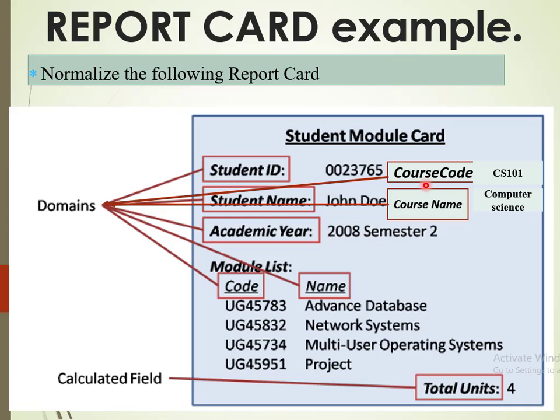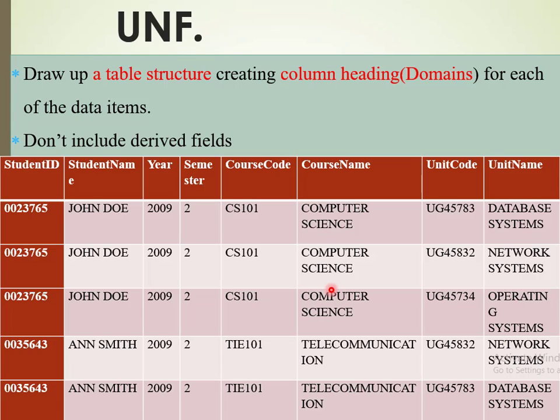Under the academic year we have two things: the year and the semester, along with course code, course name, module code, and module name. So whenever you are provided with any form — be it an invoice, a report, or a purchase order — the most important thing is that you first identify the domains, because the domains are the ones that help us build the structured frame.